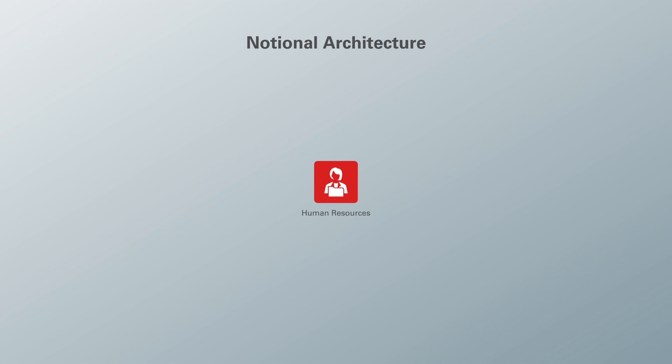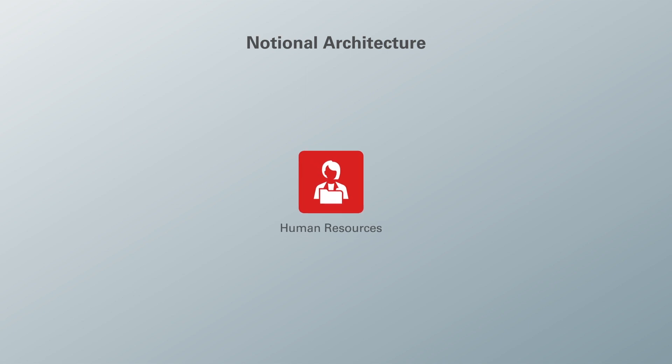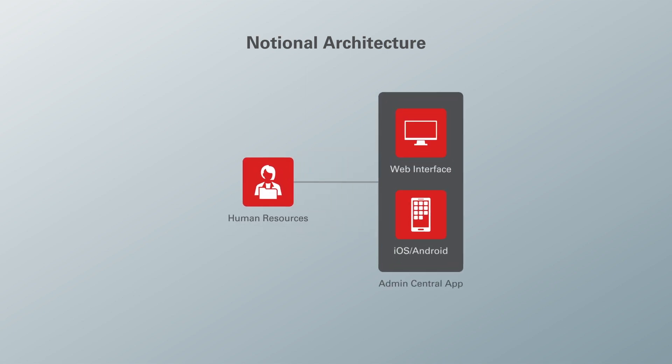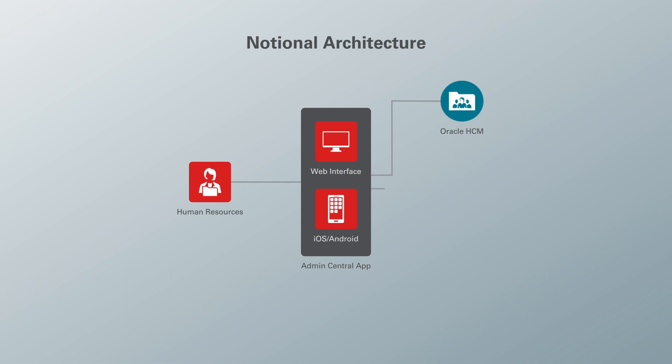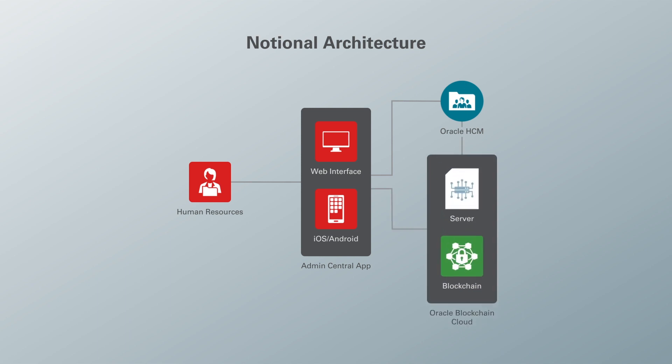Now, getting into the notional architecture — we start with the HR recruiter on the left, who needs to administrate and monitor users in the system. On the other side of the diagram is the admin central app, interacting with Oracle HCM and the blockchain. The admin central app is where HR can monitor users, milestones, and update user information, which also gets updated in Oracle HCM and Oracle's Blockchain Cloud Service at the same time.